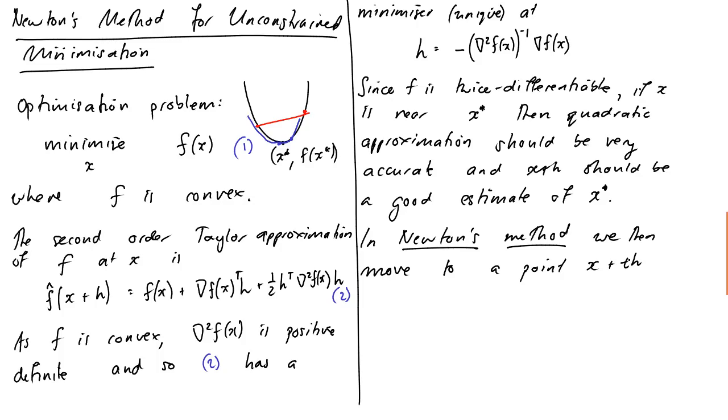Okay, so how we choose the length of the step or the value of t, I'll explain in a moment. But for now, just assume we've got a procedure for choosing a suitable t between 0 and 1, where t is chosen by a procedure called backtracking line search, which once again I'll explain in a moment. And we repeat. Okay, so let's just write down the algorithm.